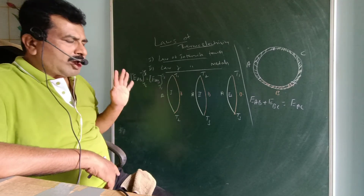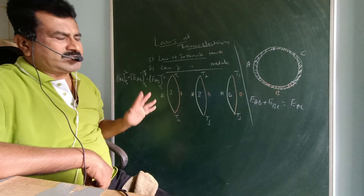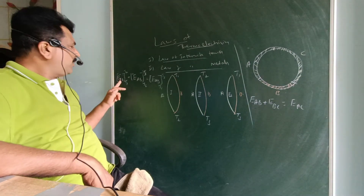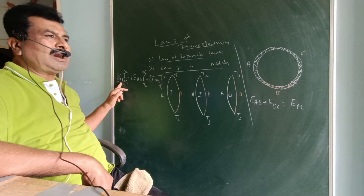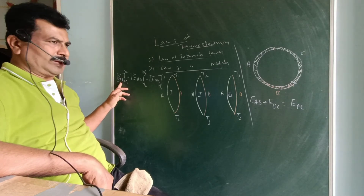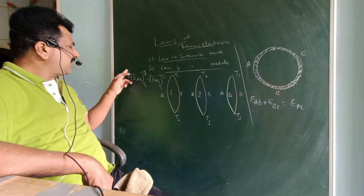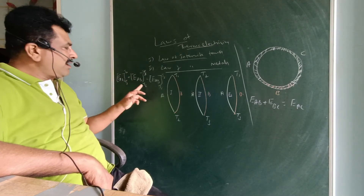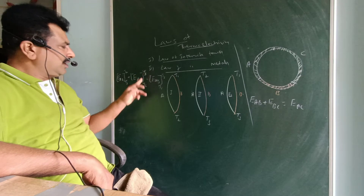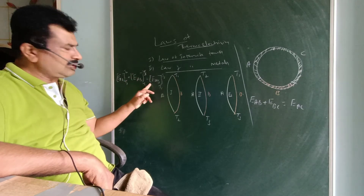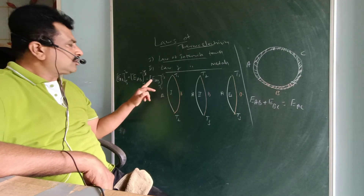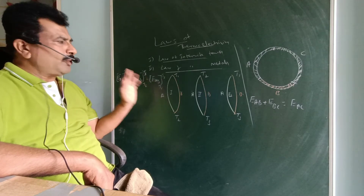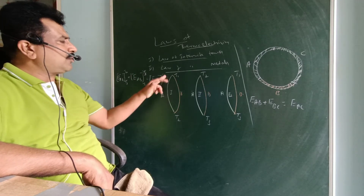The sum of the thermo EMF produced by the thermocouple of metals A and B at junction temperatures T1 and T2, and at the same thermocouple junction temperatures T2 and T3, is equal to the thermo EMF produced by the same thermocouple when the junction temperatures are T1 and T3.